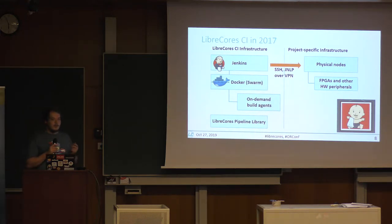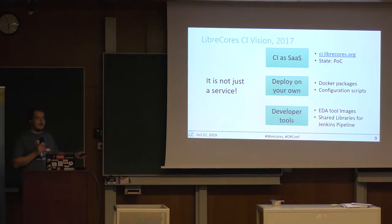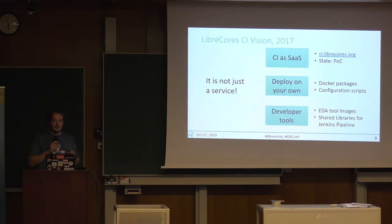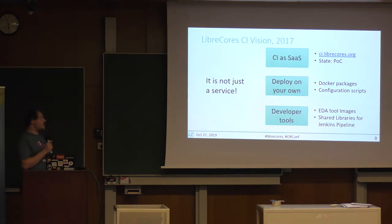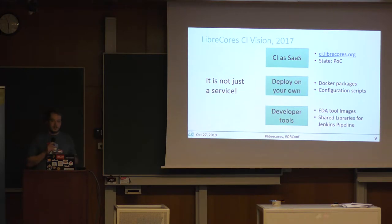There was one problem we hit two years ago: we were mostly focusing on CI as a service, which required a lot of resources and a lot of time for maintenance. In open source projects, time is the most critical resource — it's much more important than money. Unfortunately, we didn't have enough time to maintain SaaS as we would like to. But on the other hand, there were other outcomes which came from the project.